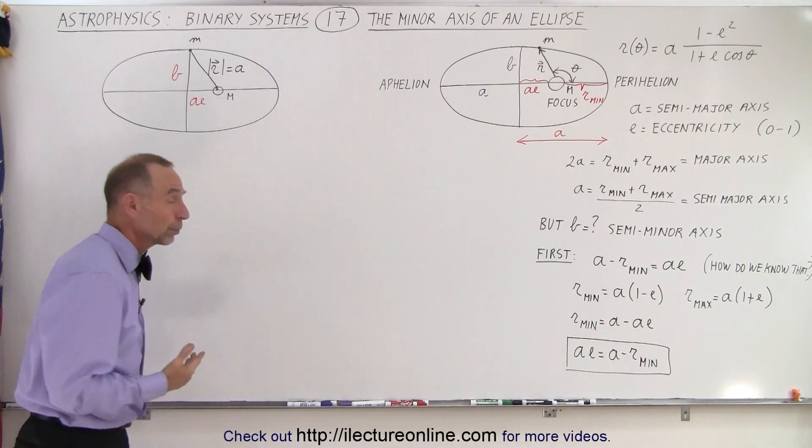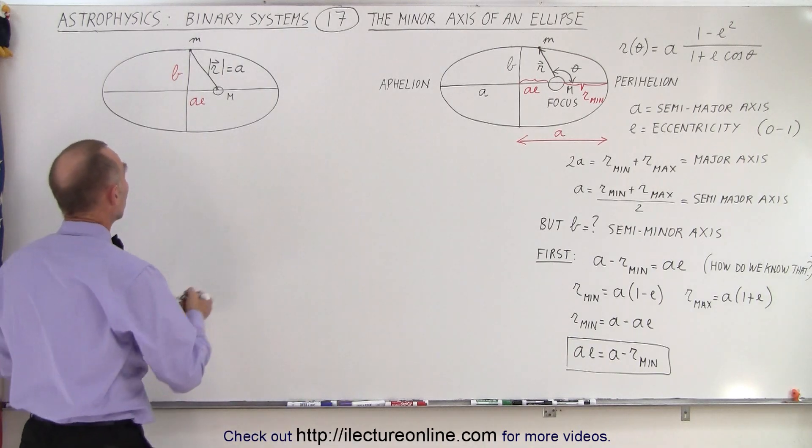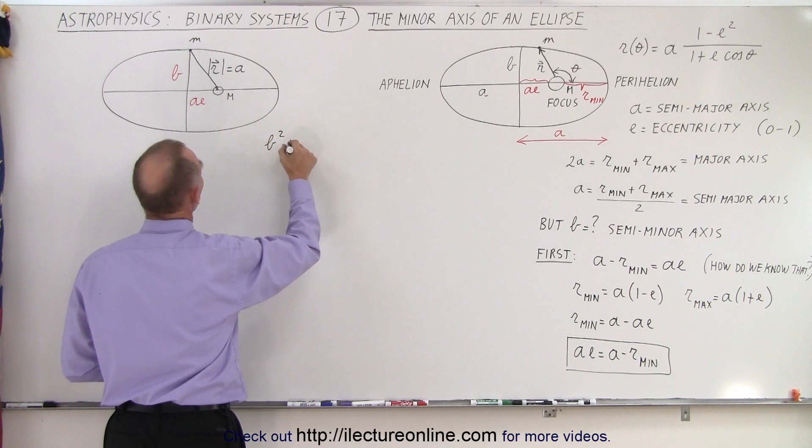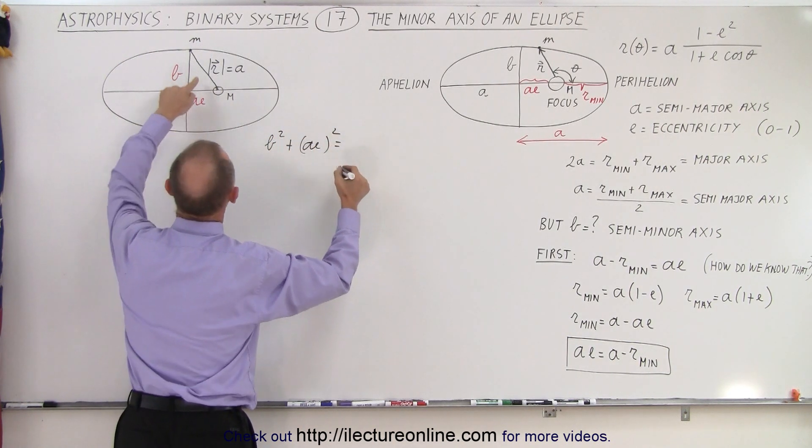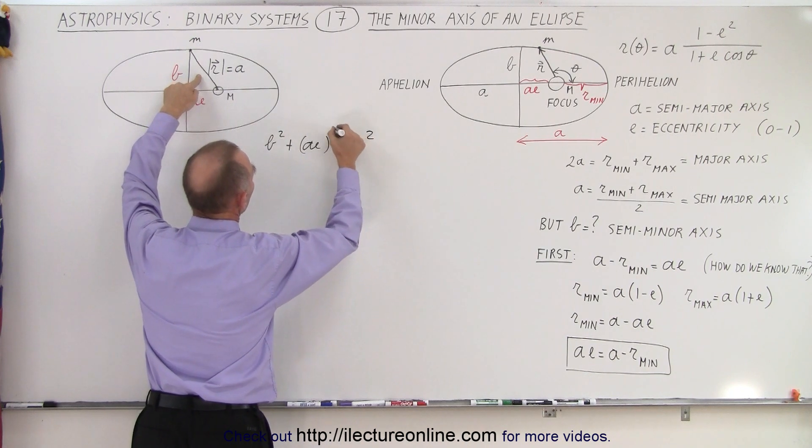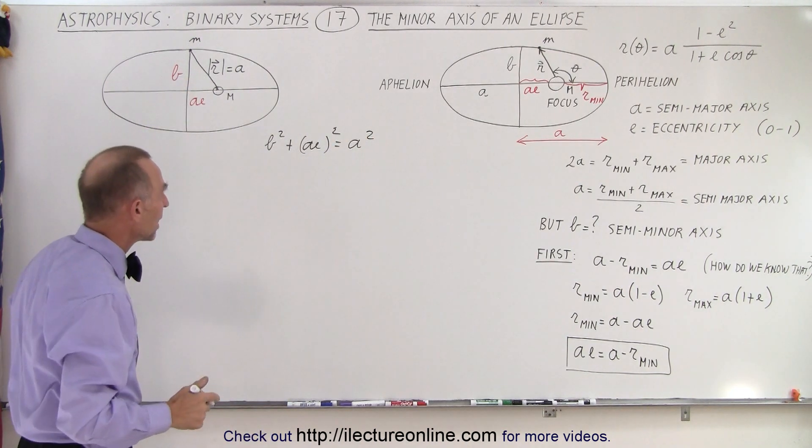So now what we're going to do is we're going to use the Pythagorean Theorem. We're going to say that B² plus (Ae)² must equal A², and so we're going to use this equation then to find the value for B.